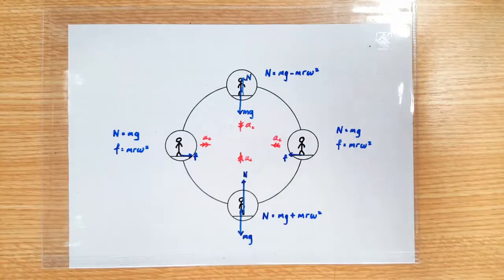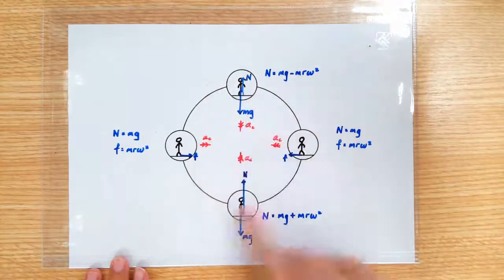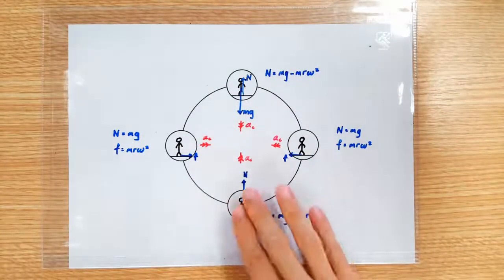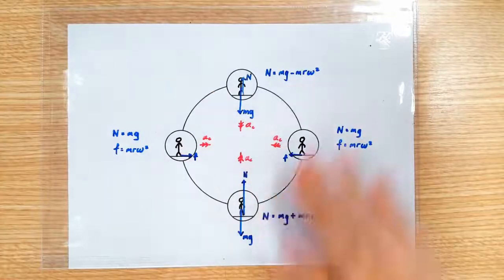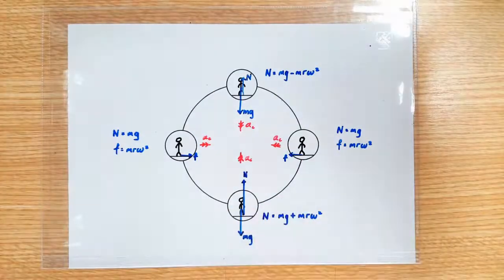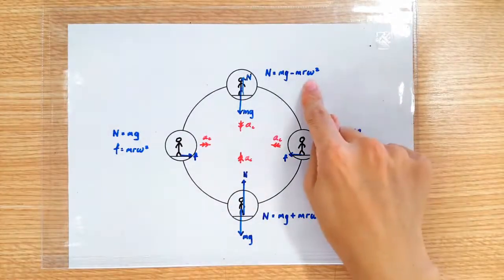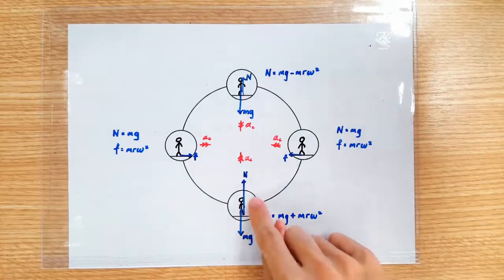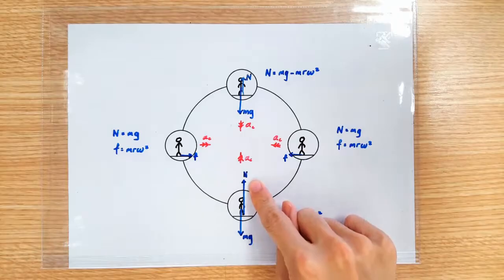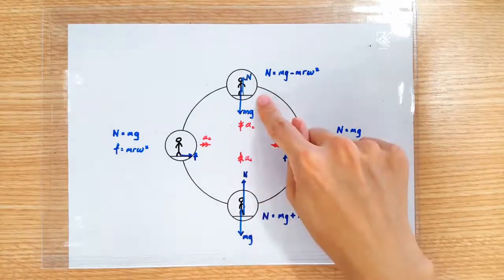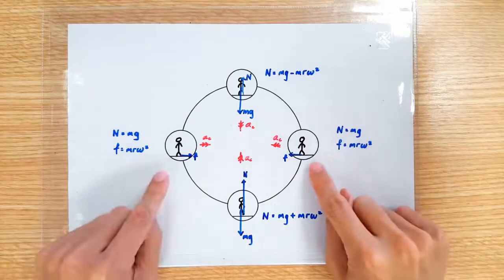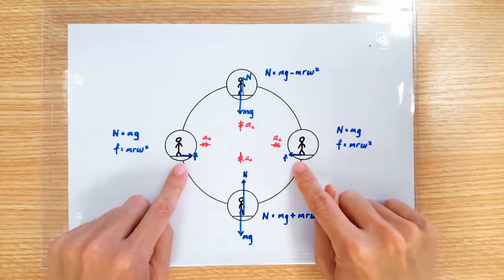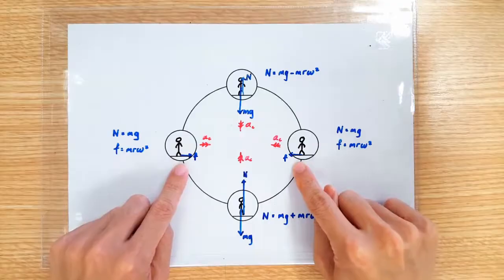But let's imagine a ferris wheel that has gone berserk — going at a very fast speed. As the ferris wheel spins faster and faster, the required centripetal force mRω² will become larger and larger. So at the bottom position the normal contact force will become larger and larger, at the top position it will become smaller and smaller, and at the three o'clock and nine o'clock positions the frictional force will become larger and larger.